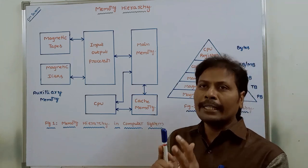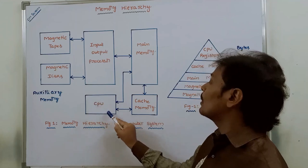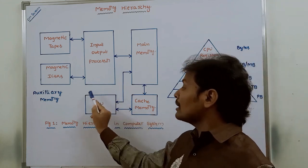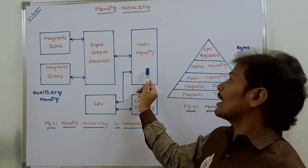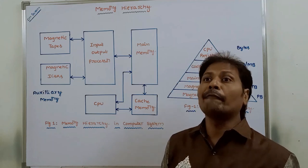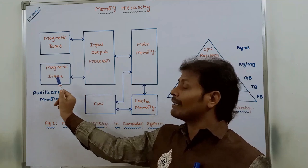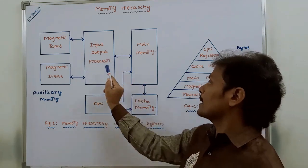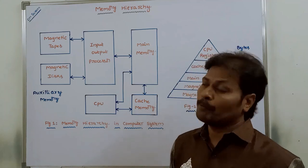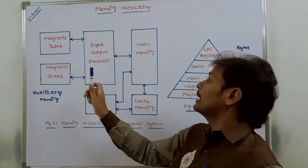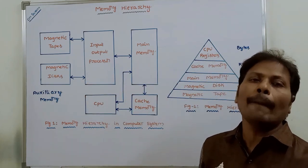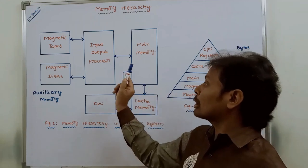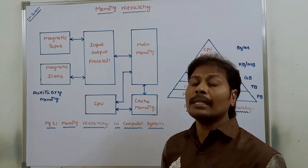Only programs and data that are needed by the CPU are stored in the main memory. Programs and data that are not needed by the CPU are transferred to the auxiliary memory. Whenever they are required, they can be transferred from auxiliary memory to the main memory through the I/O processor. I/O processor is nothing but input-output processor, and it manages the data transfer between auxiliary memory and main memory.